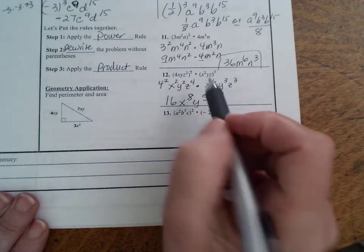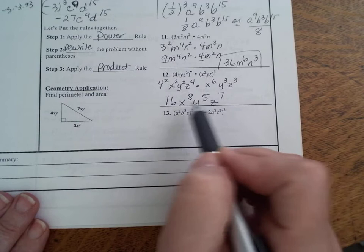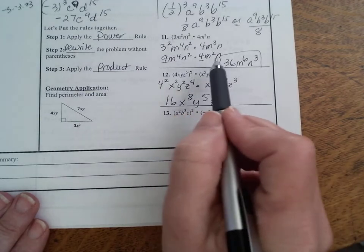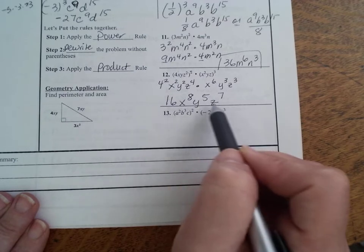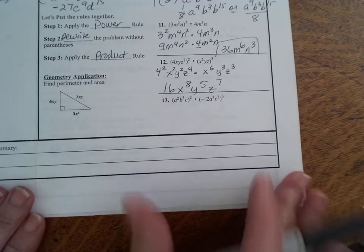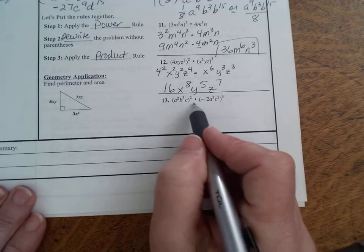Now typically, one thing I don't think I ever said before, but if you have multiple variables, usually they'll put them in alphabetical order, like m, n, and then x, y, z. They'll usually put those in alphabetical order. So now, same thing here.